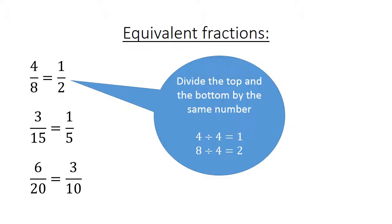Equivalent fractions: 4 over 8 equals 1 over 2, 3 over 15 equals 1 over 5, 6 over 20 equals 3 over 10. How do we calculate this? We divide the top and bottom by the same number, the highest common factor. 4 divided by 4 equals 1, 8 divided by 4 equals 2, and we get our equivalent fraction.